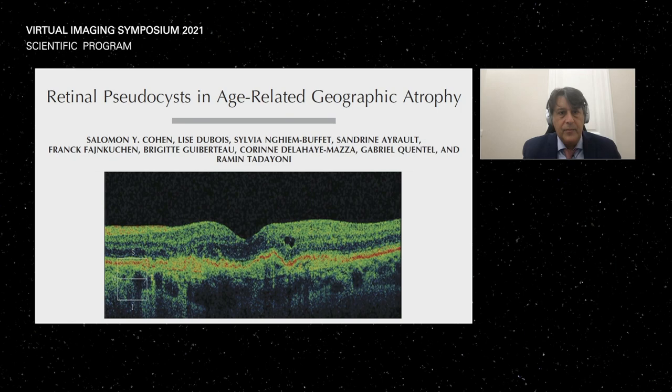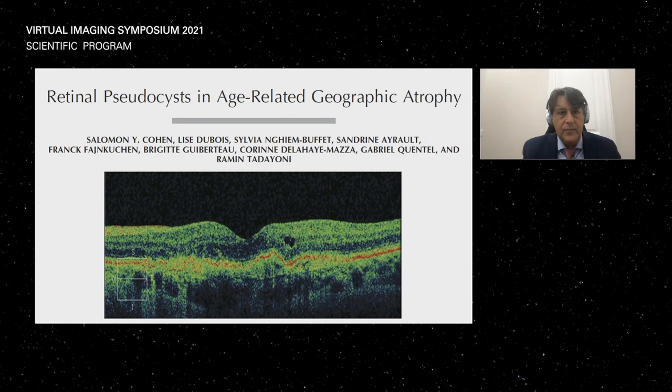This was a paper from my friend and colleague Yves Cohen, showing some atrophy here associated with degenerative cysts — sometimes just atrophy without any CNV.